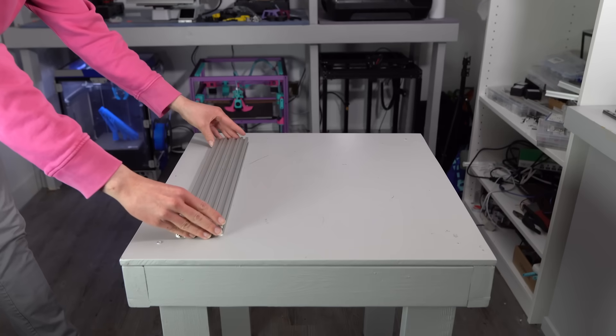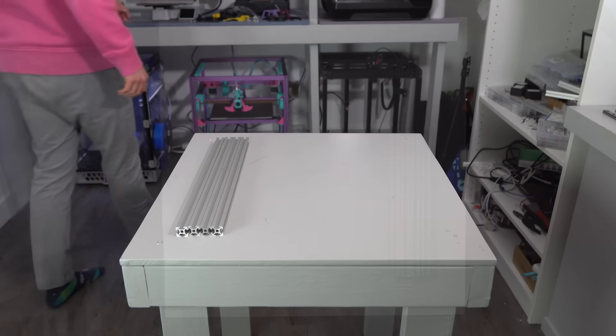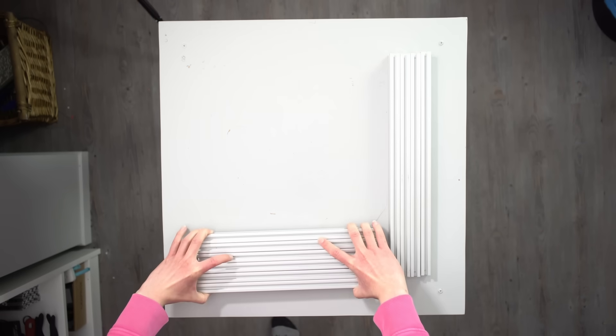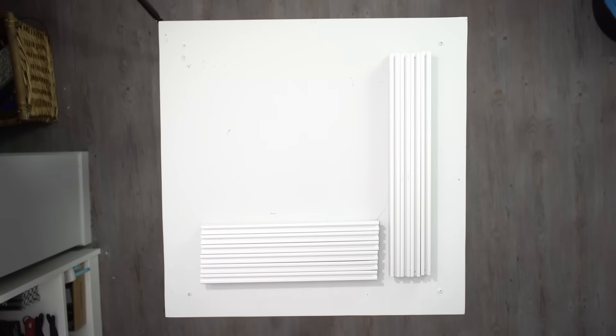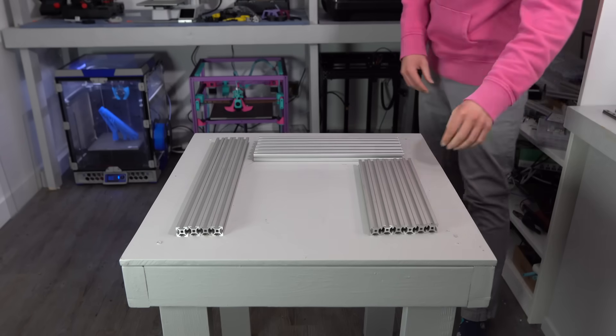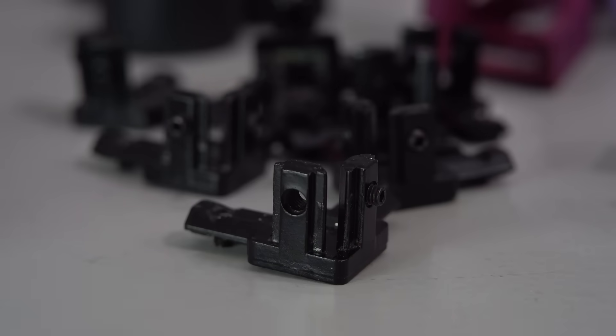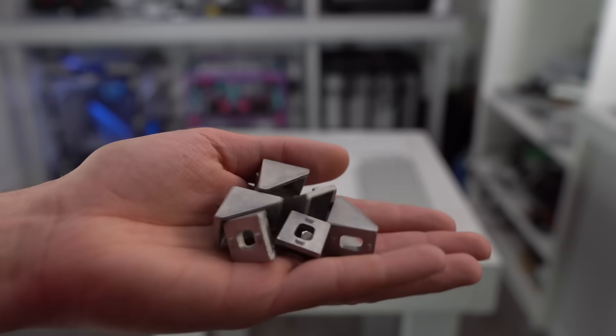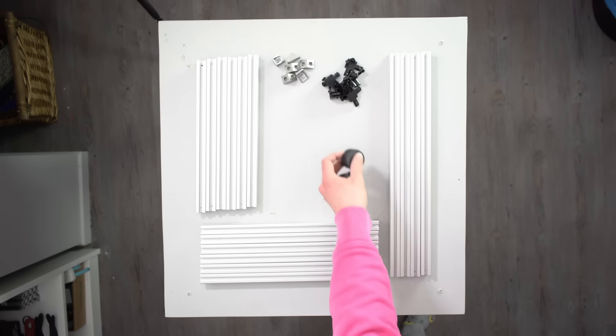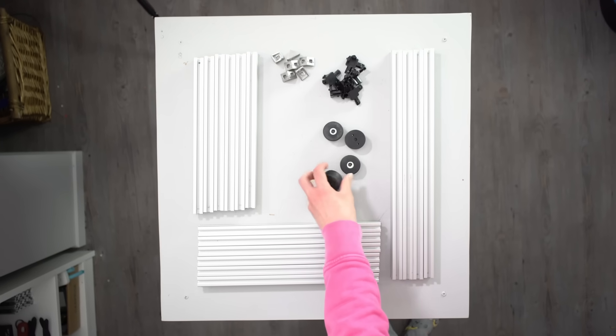The frame of a Simplecore is constructed from a total of 16 2020 aluminum extrusions. Four verticals and 12 horizontals. Six for X and six for Y. The length of them is up to you. You will also need eight three-way corner brackets like these, as well as six of these right-angle 2020 brackets. Finally, you need four rubber feet, and of course, the printed parts.